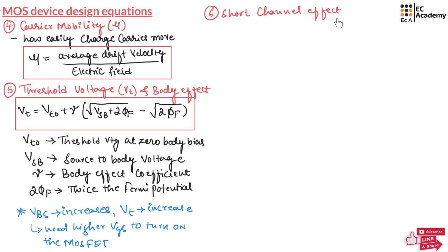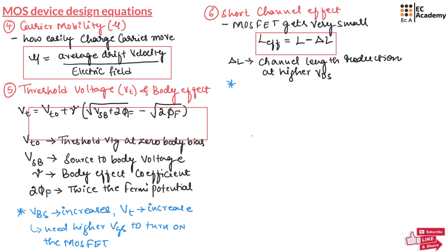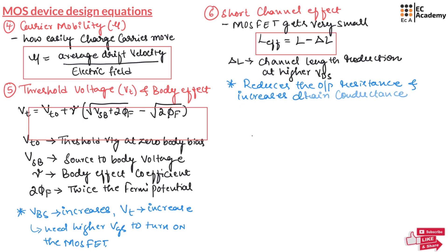Now let us understand the short channel effect. When a MOSFET gets very small, the effective channel length can be given as L minus ΔL, where L is the channel length and ΔL represents the channel length reduction at high Vds. This short channel effect reduces output resistance and increases drain conductance.